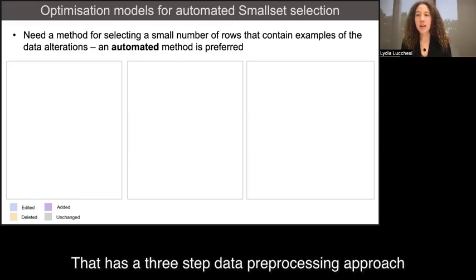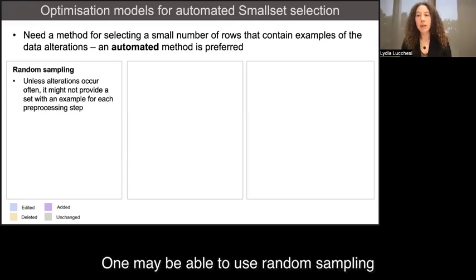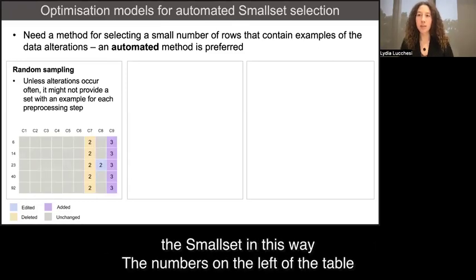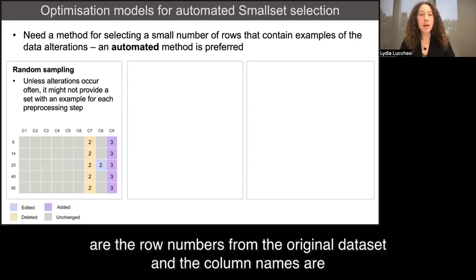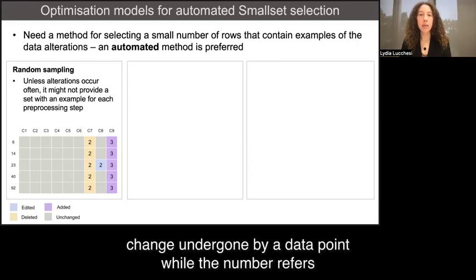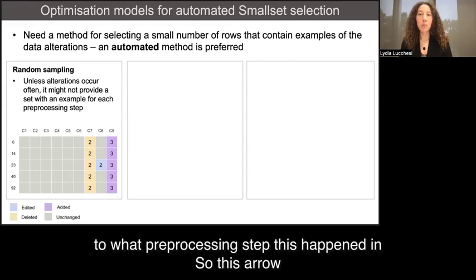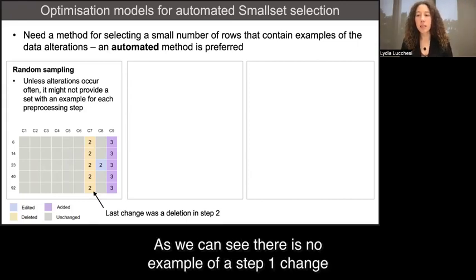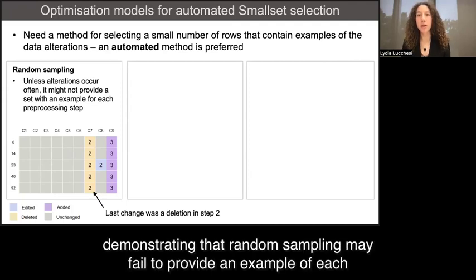One may be able to use random sampling to get a small set, and this shows a result from selecting the small set in this way. The numbers on the left of the table are the row numbers from the original dataset, and the column names are across the top. The cell color refers to the last type of data change undergone by a data point, while the number refers to what pre-processing step this happened in. So this arrow points to a data cell that was deleted in step two. As we can see, there is no example of a step one change, demonstrating that random sampling may fail to provide an example of each pre-processing step.